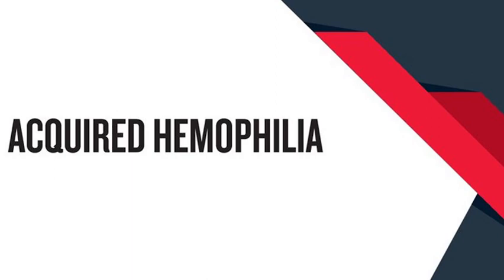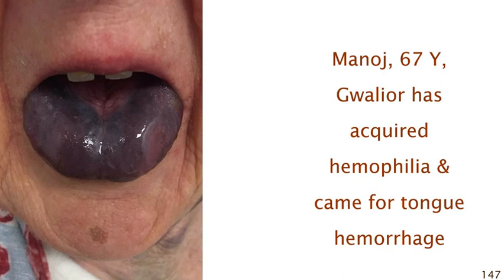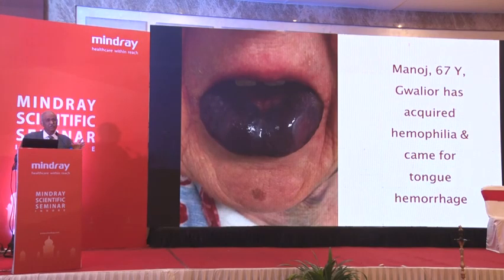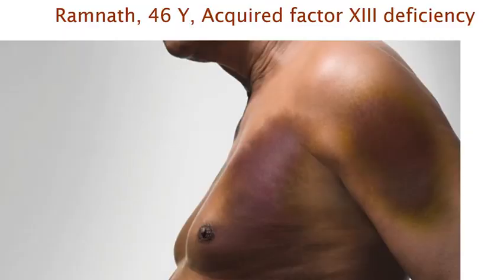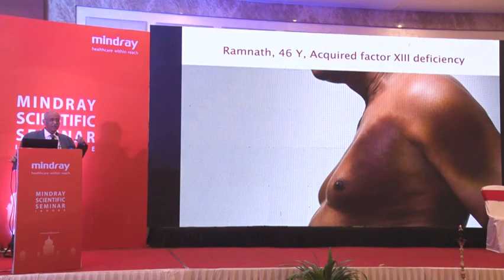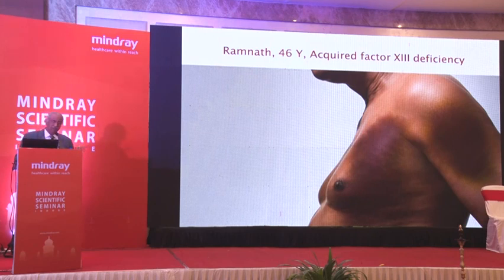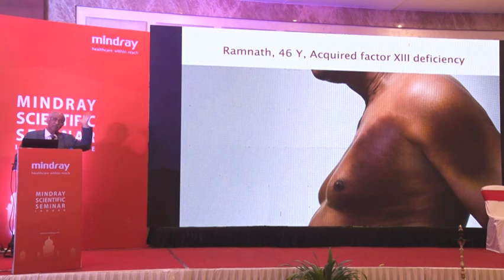Closing with a few more cases: a 67-year-old gentleman named Manoj came with a spontaneous tongue hematoma — he had not bitten his tongue. This came out to be acquired hemophilia. Another gentleman had an acquired hemophilia-like condition but due to antibody against factor XIII — which is not tested by the intrinsic or extrinsic pathway tests. You must specifically look for factor XIII with a simple but dedicated test, because everything else may be normal while factor XIII is deficient, either from birth or as an inhibitor developing in adulthood.